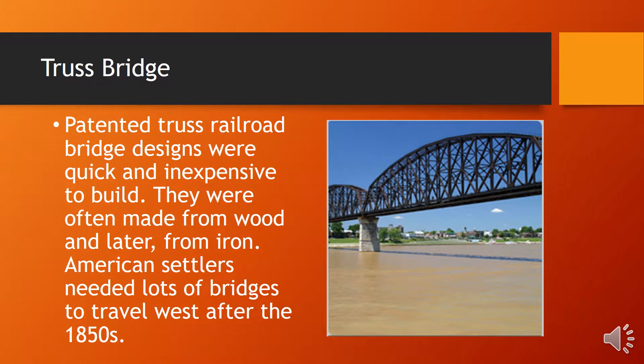A truss bridge. Patent and truss railroad bridge designs were quick and inexpensive to build. They were often made from wood and later from iron. American settlers needed lots of bridges to travel west after the 1850s.